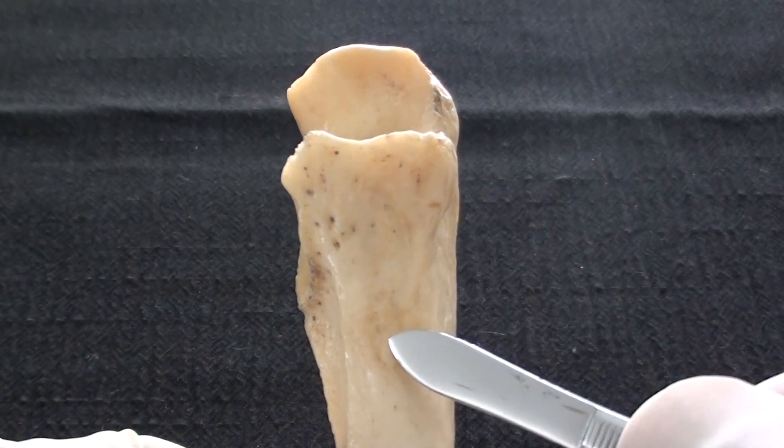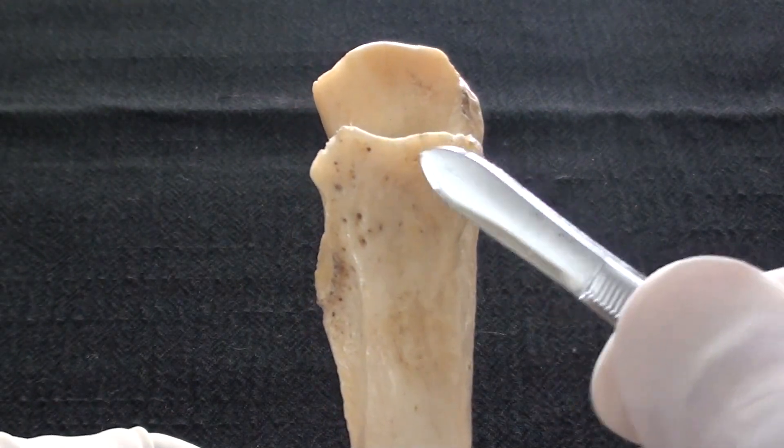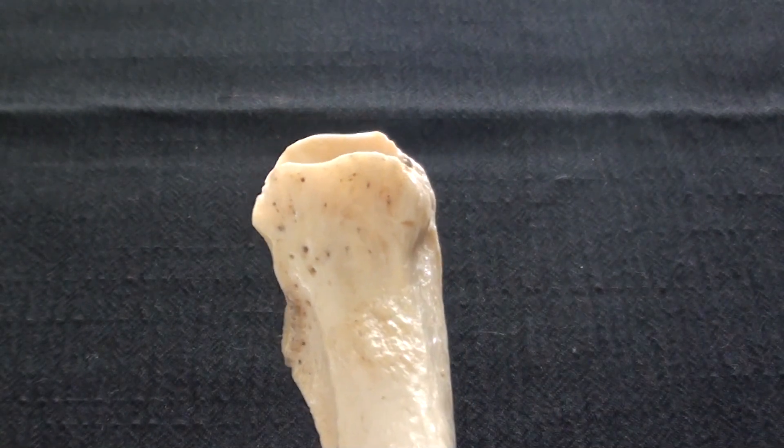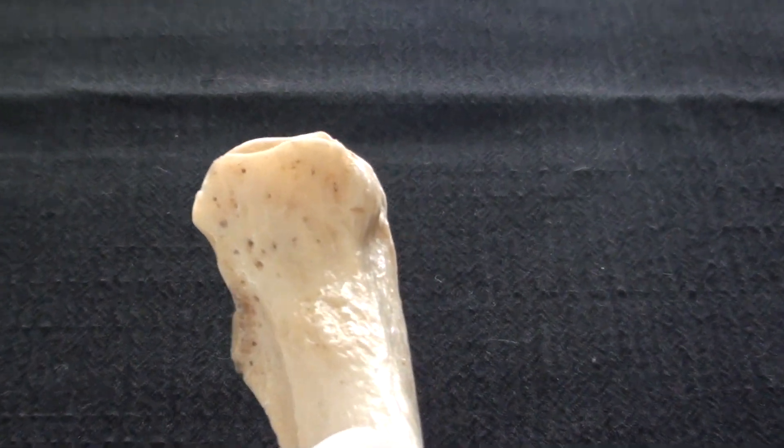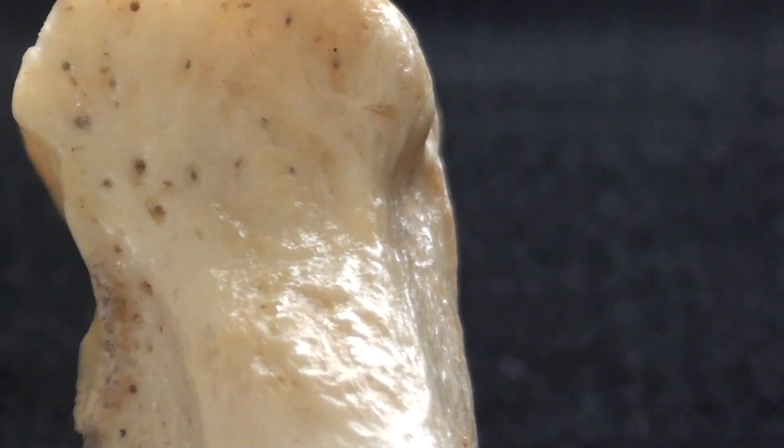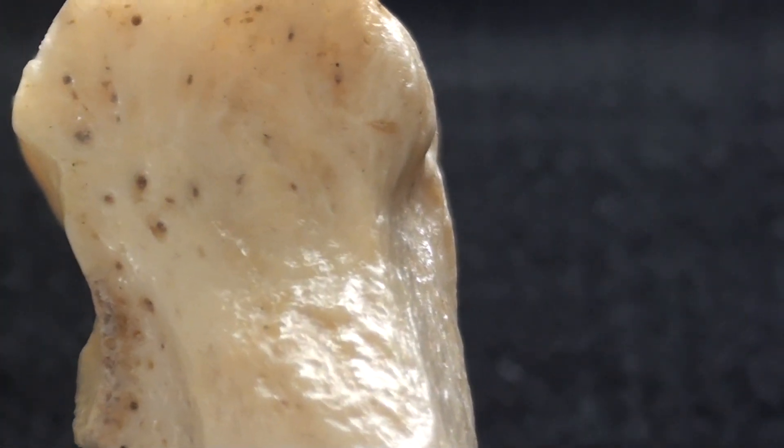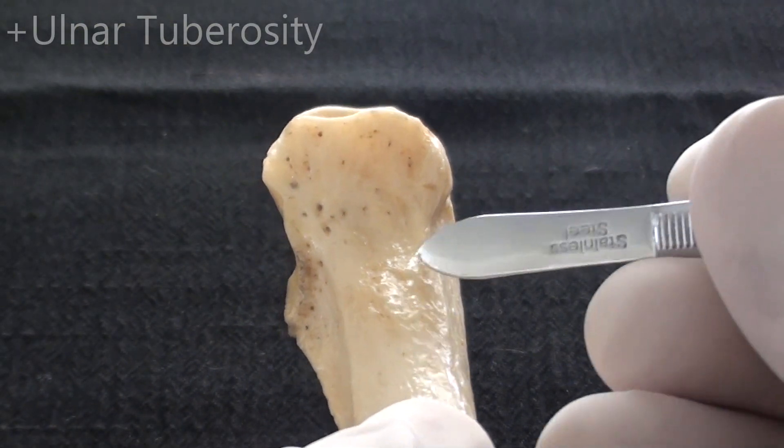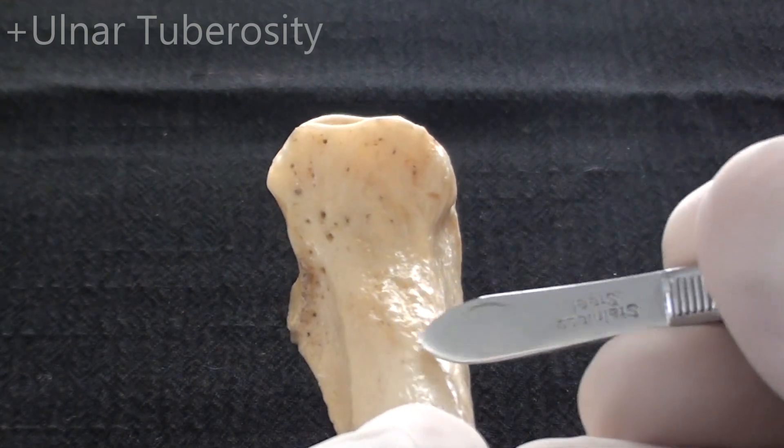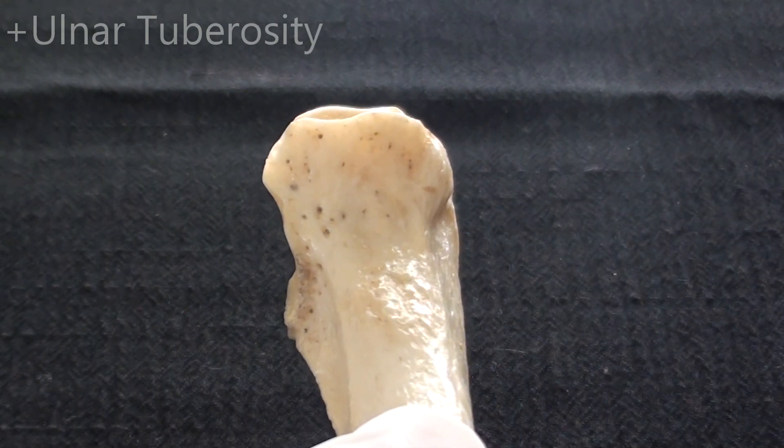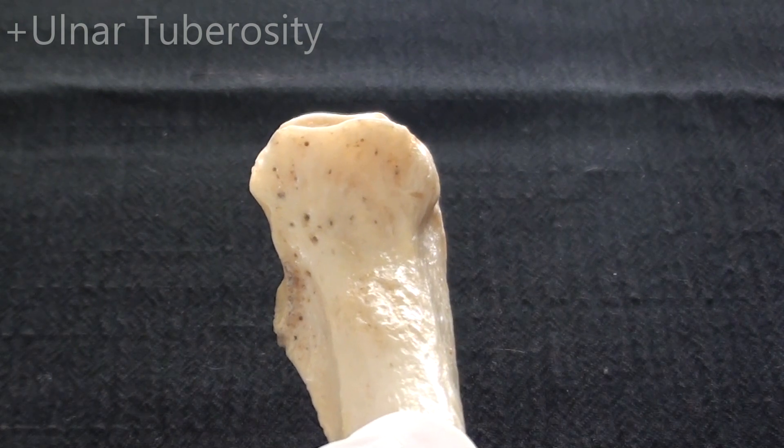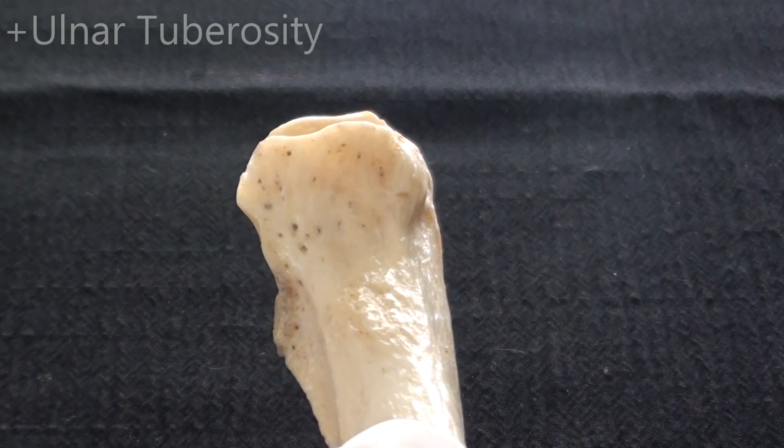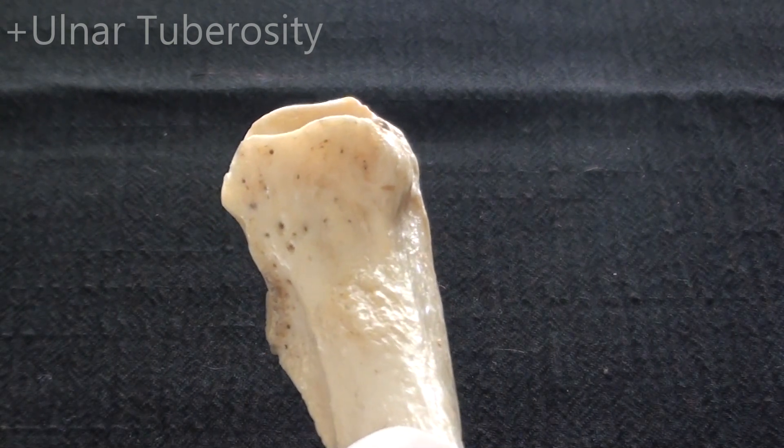About a couple of centimeters inferior to the coronoid process of the ulna, there will be an area which shows a marked irregular surface of the bone. Let's try to zoom in to identify the area which is called the ulnar tuberosity. Ulnar tuberosity is this segment of the bone here and it needs to be related to insertion of the brachialis muscle. Brachialis muscle is considered to be the main, most powerful elbow flexor.